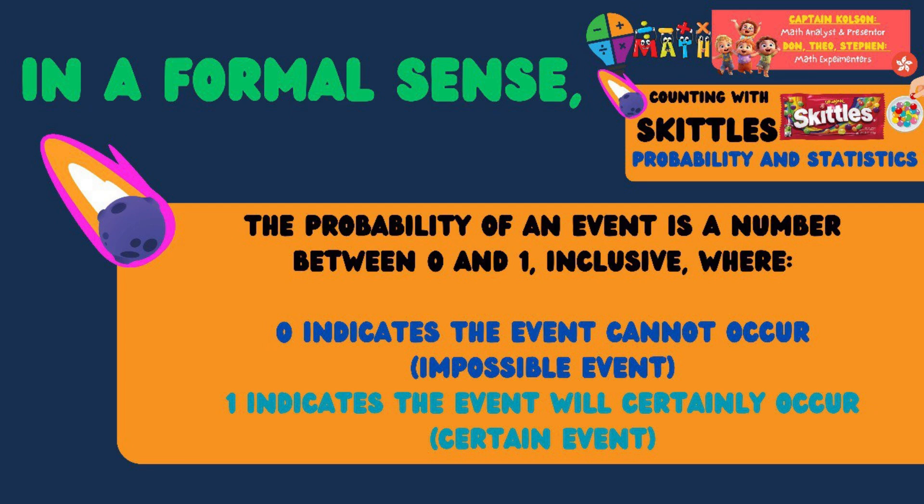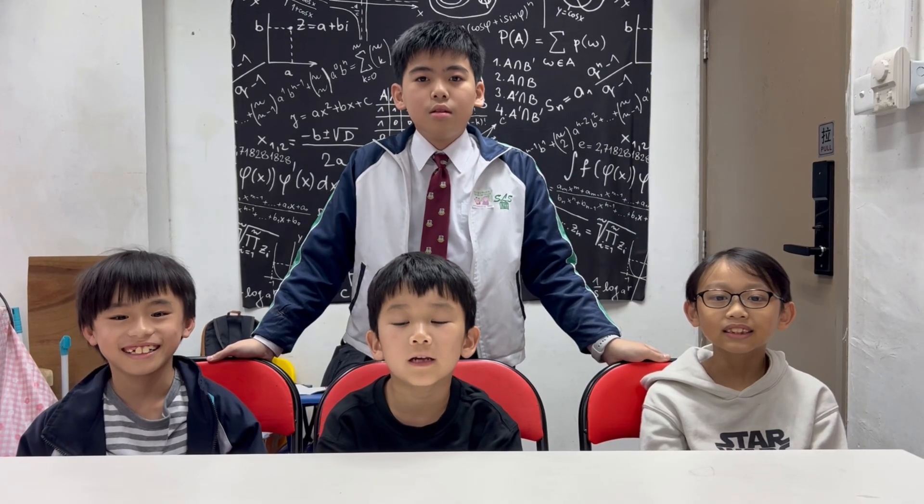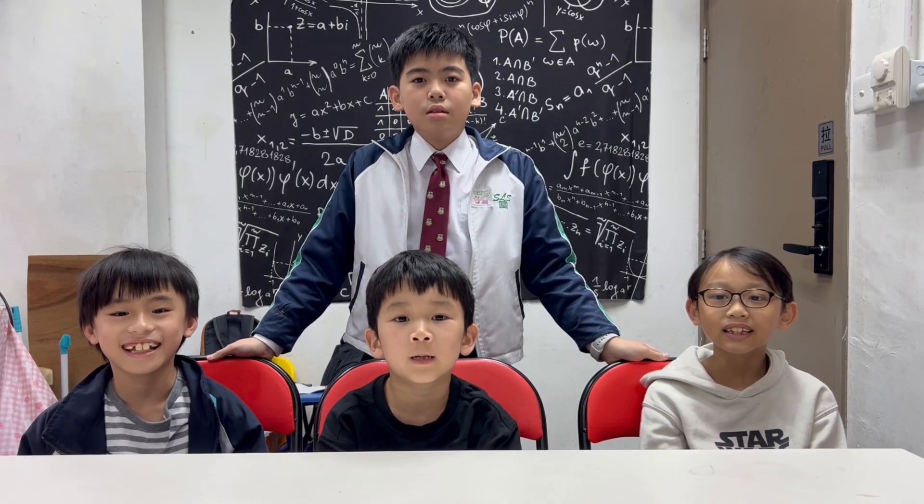1 indicates the event will certainly occur — a certain event. What is Statistics?